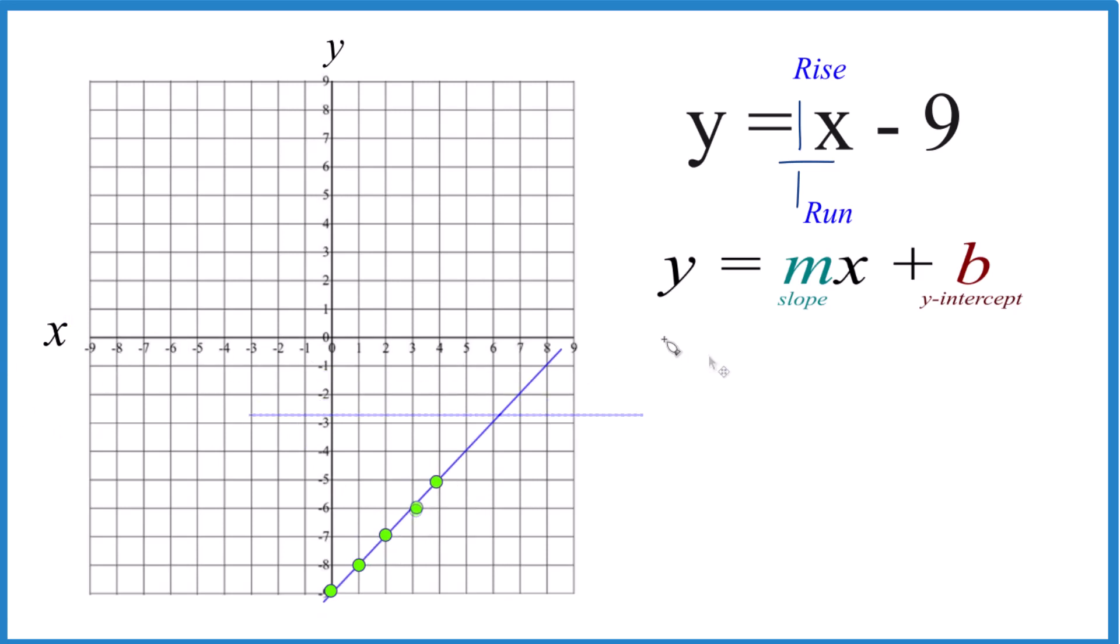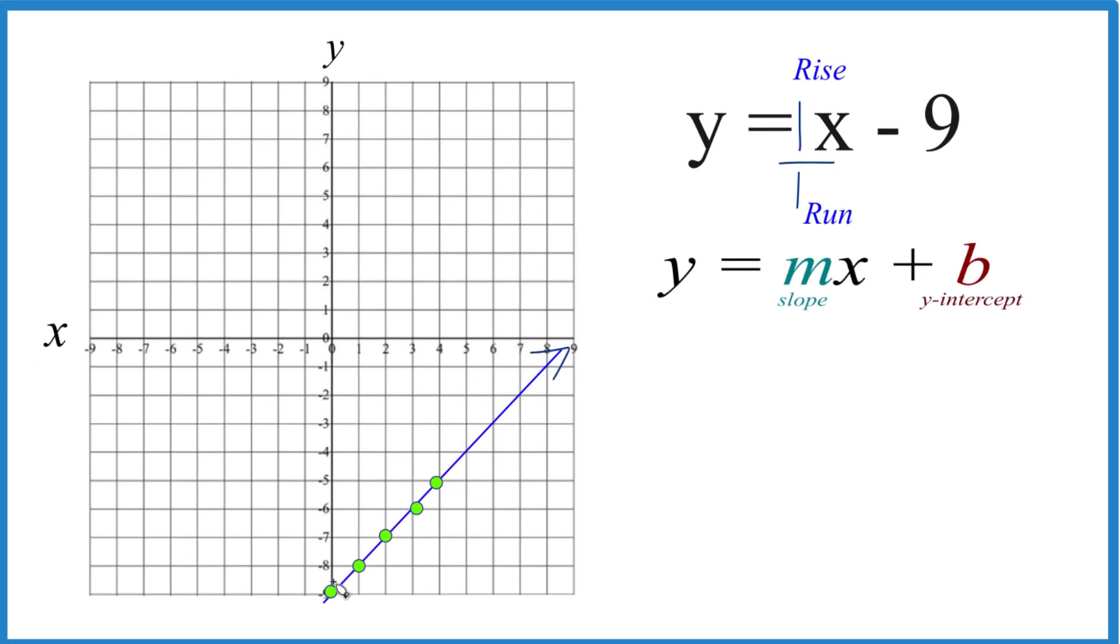Let's put a line through that. Then we put arrows, show this goes to infinity. So that's the graph for y equals x minus 9 using slope-intercept form.